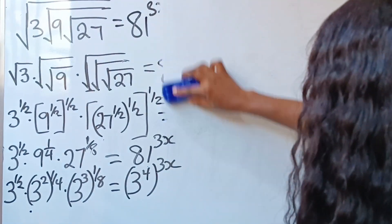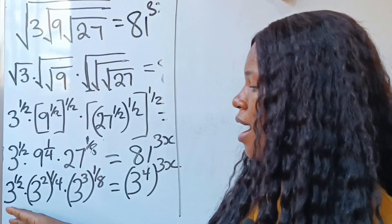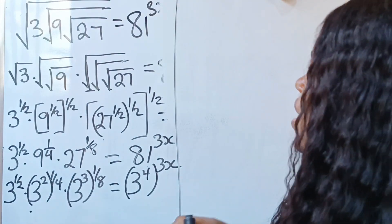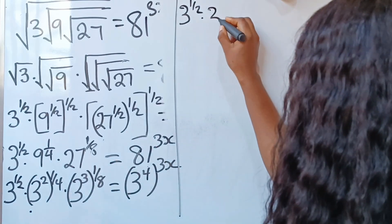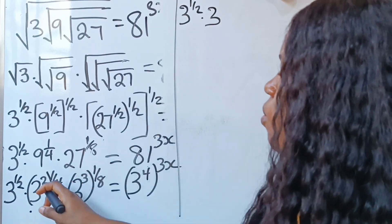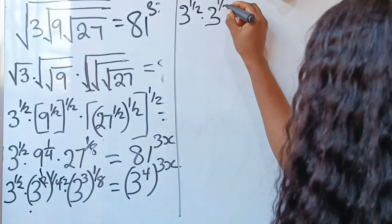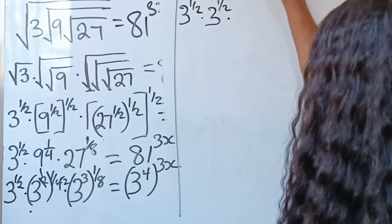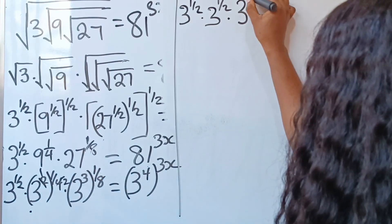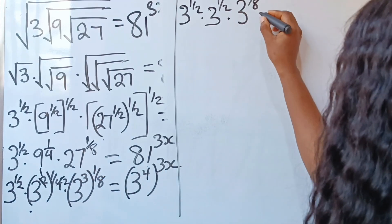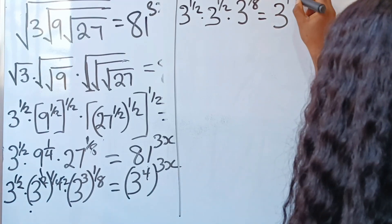Now we have the same base, so let's multiply out the powers. This gives 3 to the power of one-half, multiplied by 3 to the power of 2 times 1 over 4, which simplifies to 1 over 2, multiplied by 3 to the power of 3 times 1 over 8, which gives 3 over 8. This equals 3 to the power of 4 times 3x, which gives 12x.